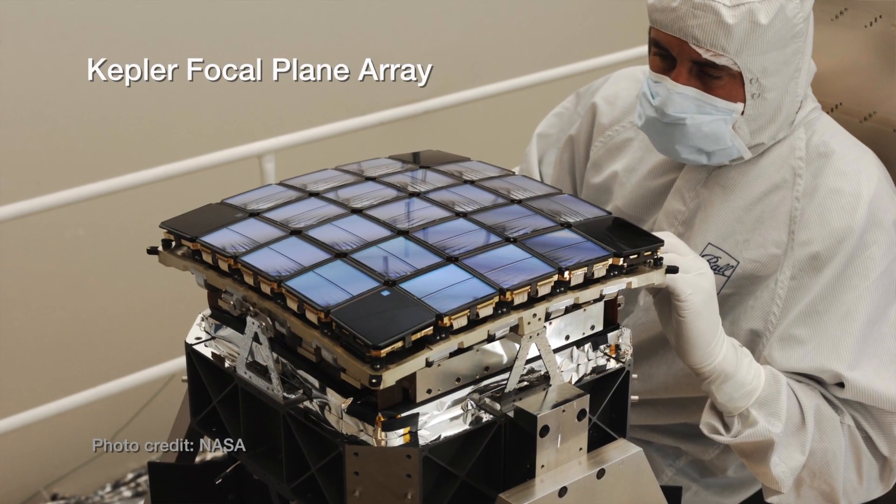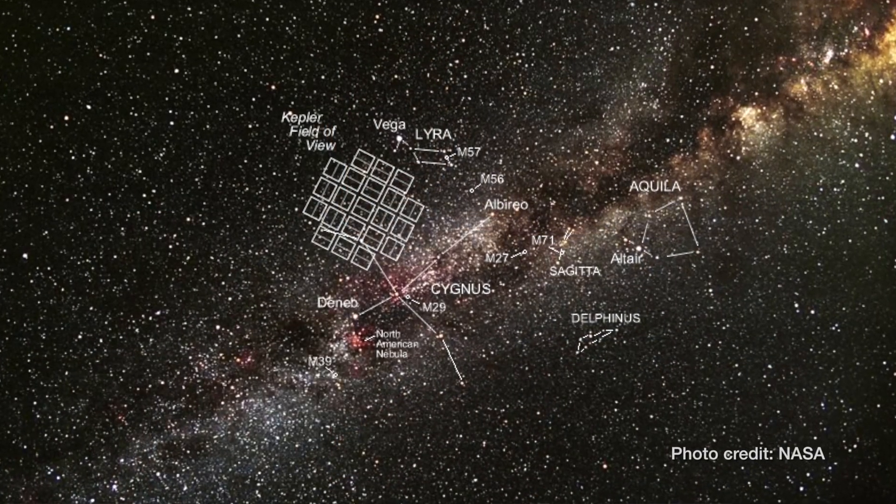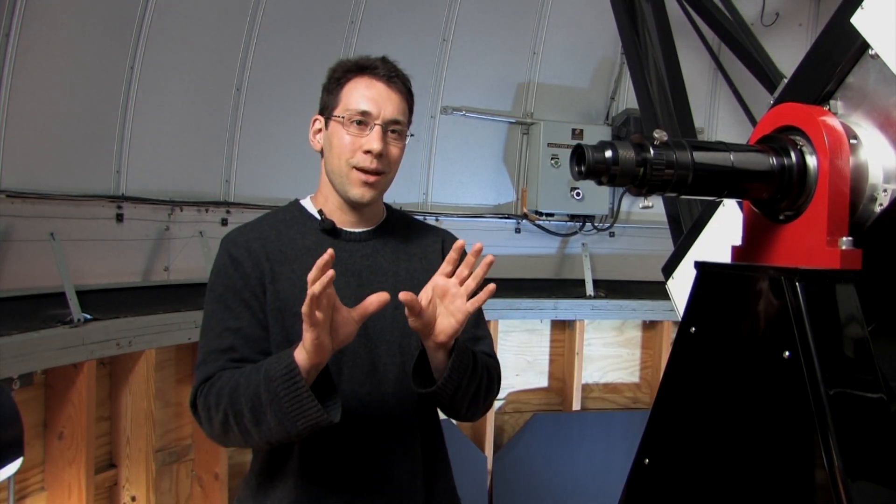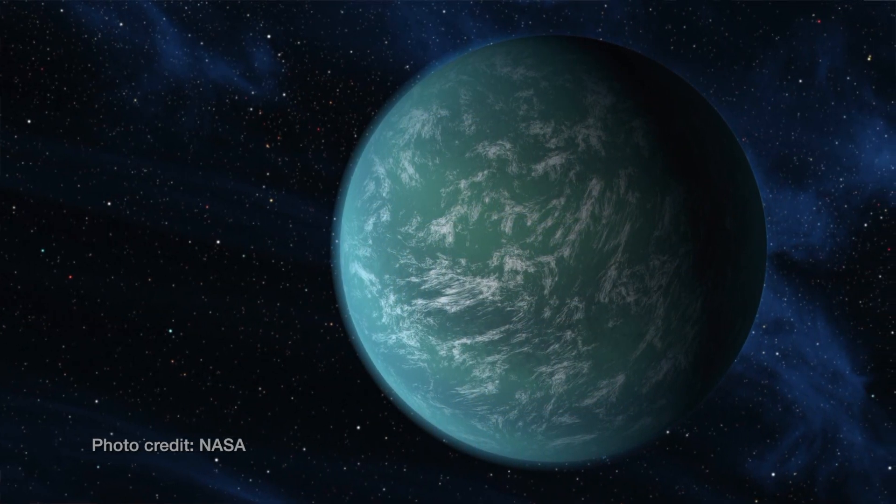This discovery is about a particular planetary system which goes under the name Kepler 186, which means it's the 186th discovery of Kepler where that planetary system has been verified beyond a reasonable doubt. There is no other interpretation except that these are definitely planets passing in front of the star.